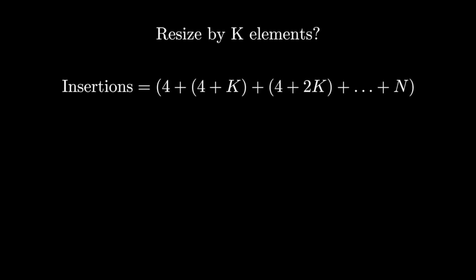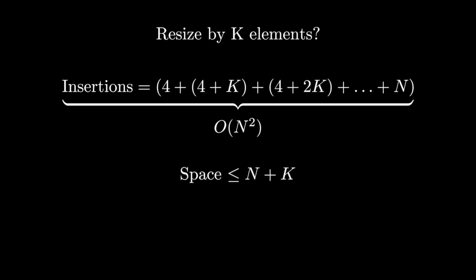our dynamic array still performs n insertions in O of n squared time. It's also worth noting that a scheme where K is very large is not very desirable, since a large chunk of the allocated blocks in our dynamic array will not be used.